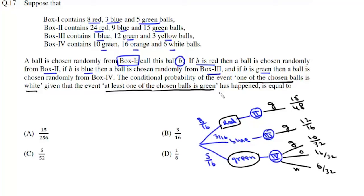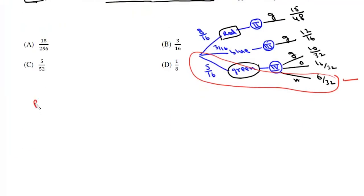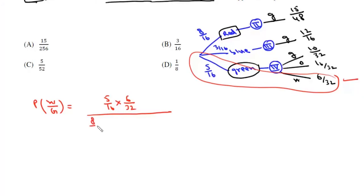We have to find the conditional probability that one of the chosen balls is white. We get white only in the third case. So we take that case in the numerator and all other cases in the denominator. The conditional probability is 5 by 16 into 6 by 32, upon 8 by 16 into 15 by 48, plus 3 by 16 into 12 by 16, plus 5 by 16 into 1.